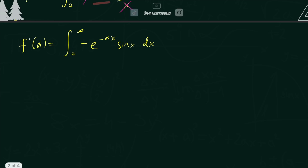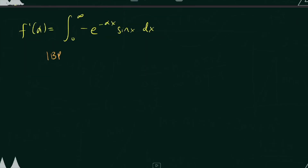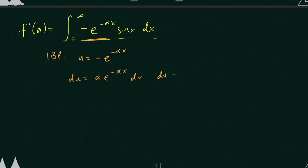Now we're working in terms of x because we already took care of that partial derivative, and we're going to start integrating in terms of x. We'll use integration by parts: we make our u value the entire term outside the sine — so u = negative e^(−αx) — and du, differentiating in terms of x, gives positive α · e^(−αx) dx. We make dv = sin(x) dx, so v = negative cos(x).